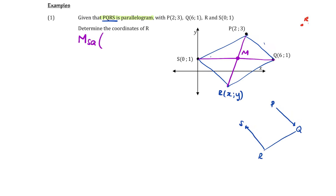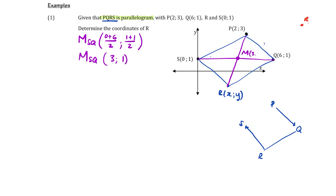The midpoint of SQ: we add our x-values, 0 plus 6, and divide by 2; we add our y-values, 1 plus 1, divided by 2. Simplifying, 6 divided by 2 is 3, and 2 divided by 2 is 1, so the midpoint of SQ is (3, 1).